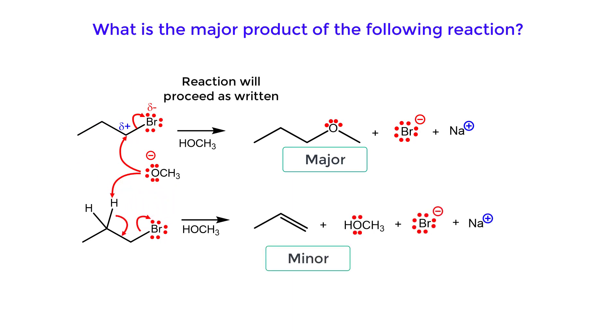The reaction will proceed as written. The bromide ion is a good leaving group and is a much weaker base than the methoxide ion.